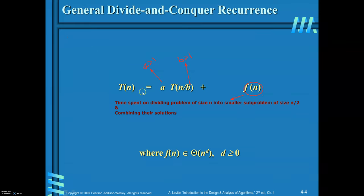So T(n) = a·T(n/b) + f(n), where f(n) is the time spent on dividing a problem of size n into smaller subproblems of size n/b and combining their solutions. Here f(n) belongs to Θ(n^d), where d ≥ 0.